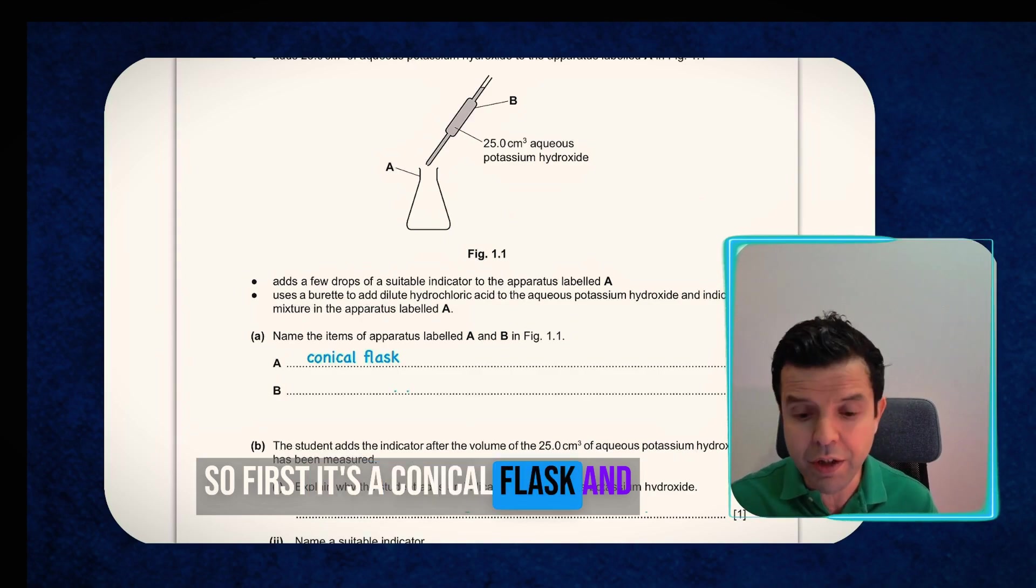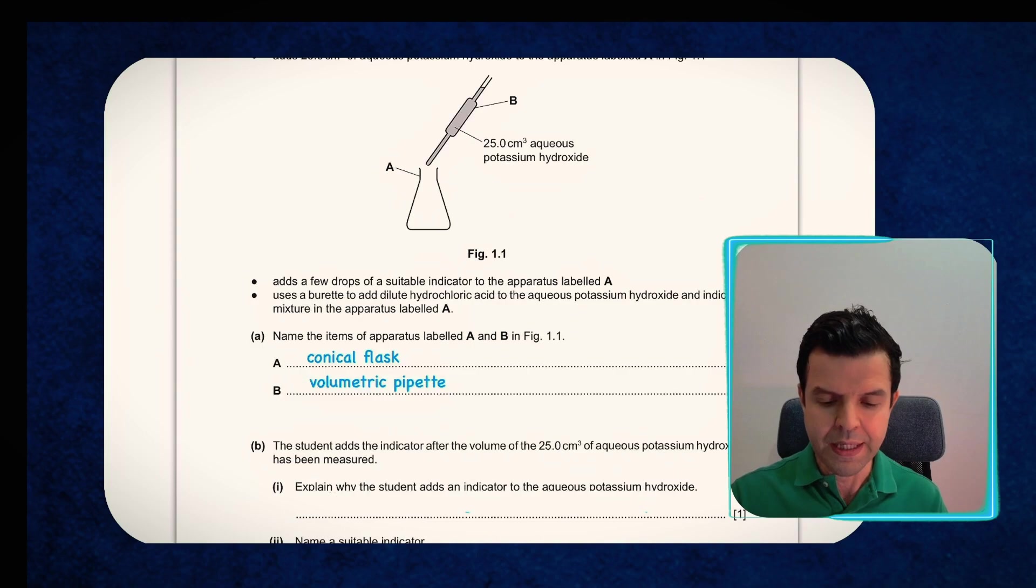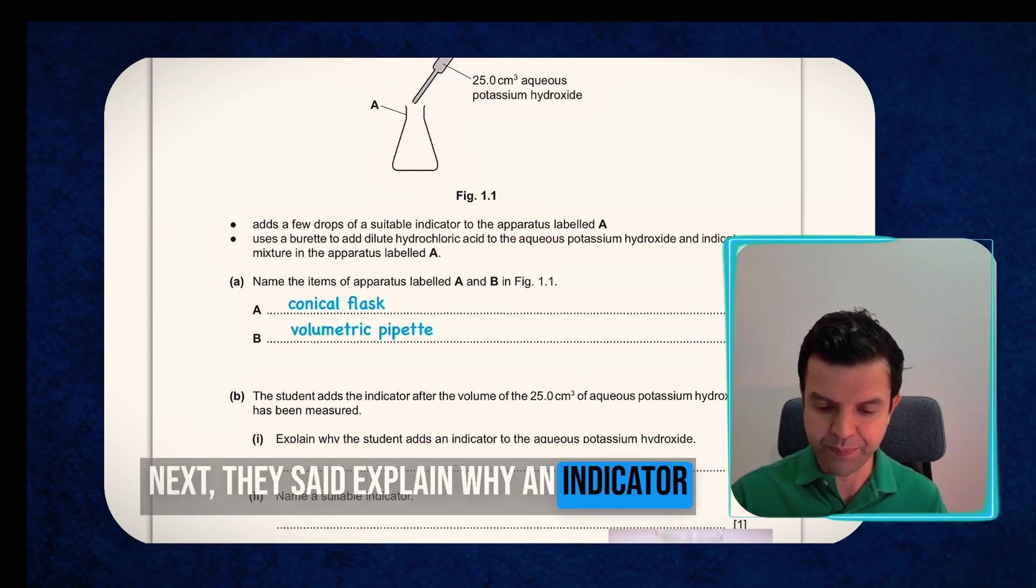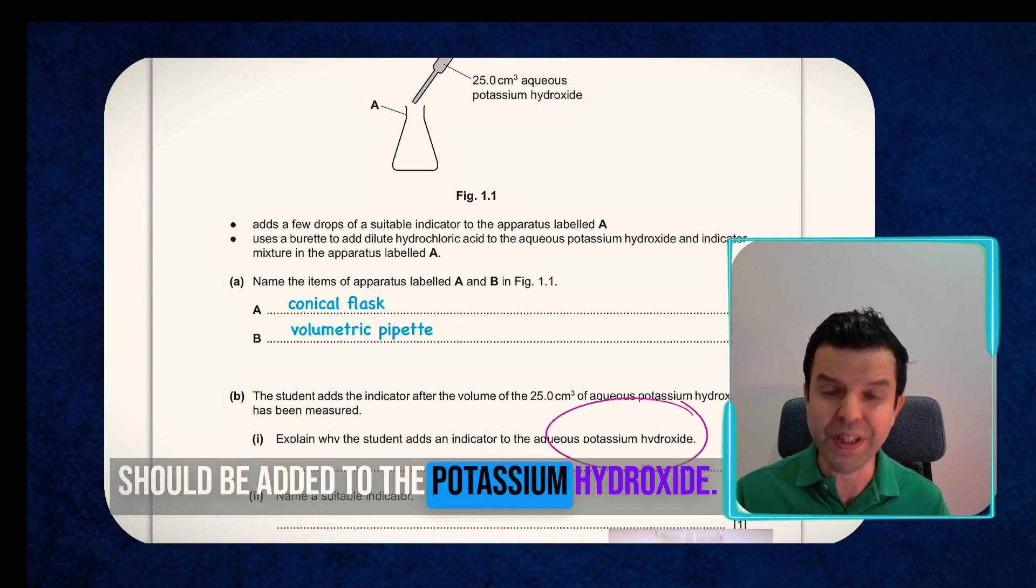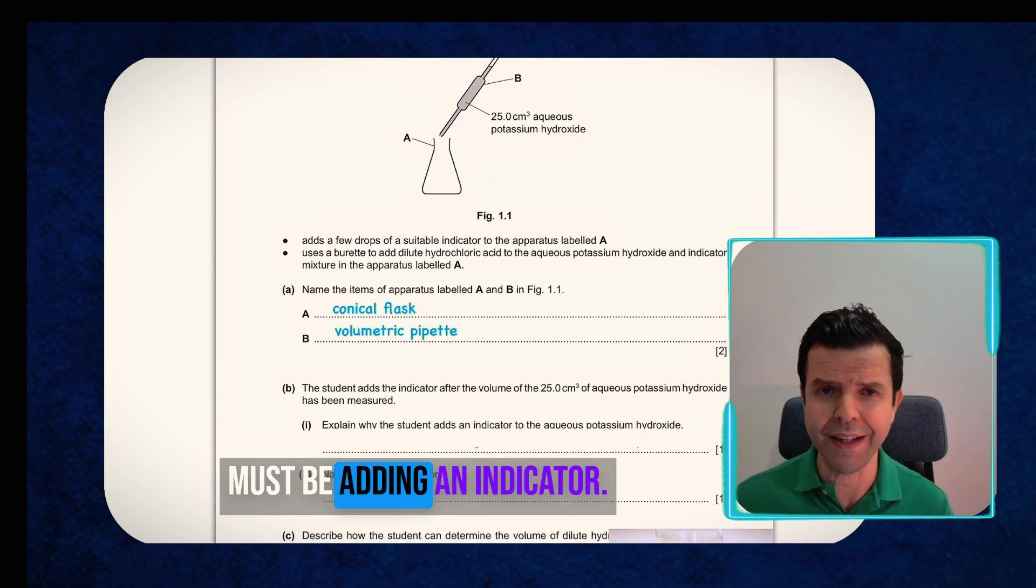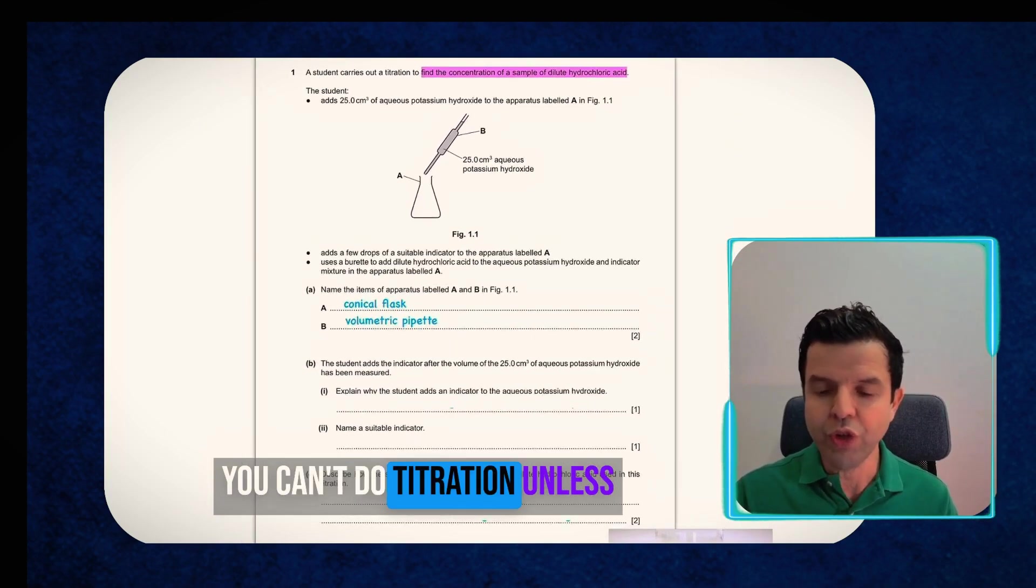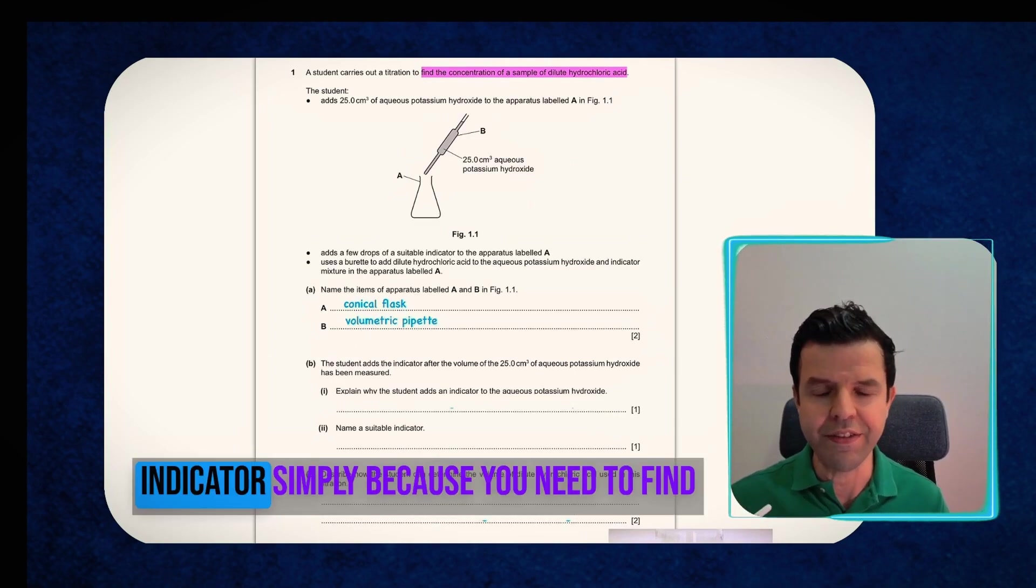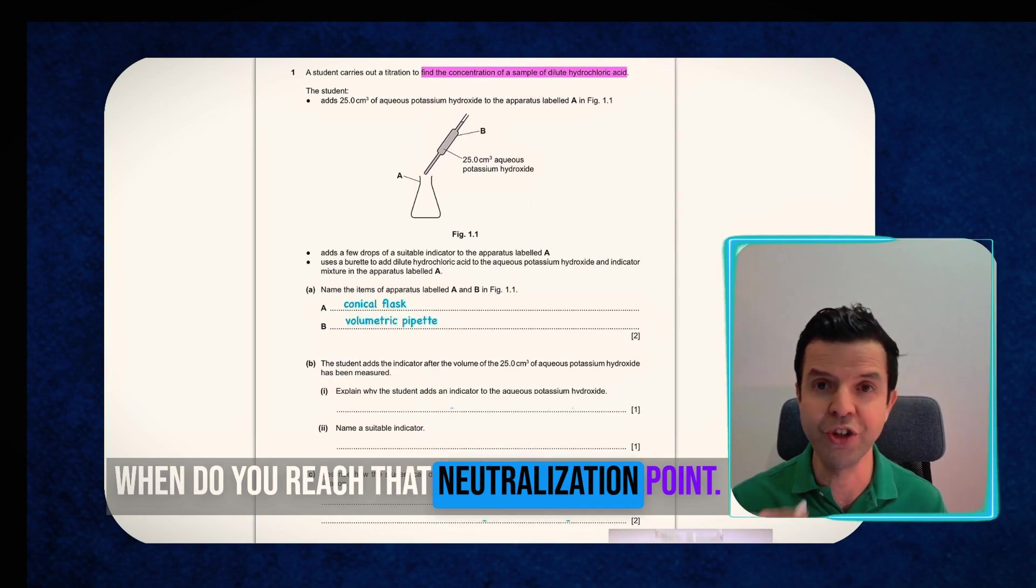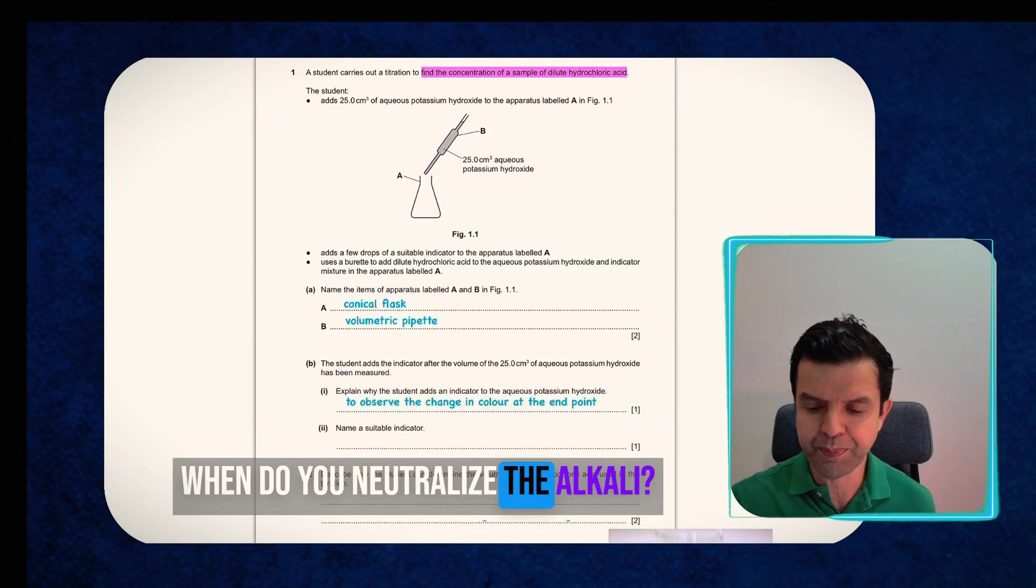Next they said explain why an indicator should be added to the potassium hydroxide. So why in titration you must be adding an indicator. The answer is simple. You can't do titration unless you have an indicator, simply because you need to find when do you reach that neutralization point. So I'll tell them you need to find when do you neutralize the alkali, and you can tell when does that neutralization has happened.